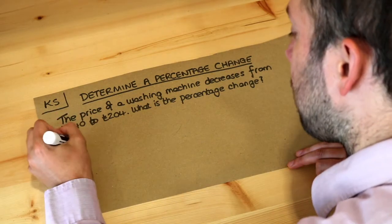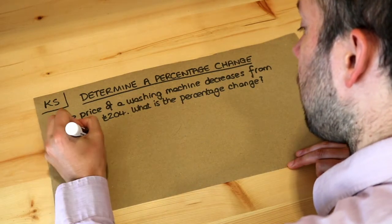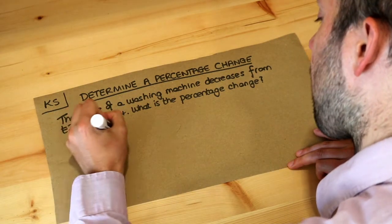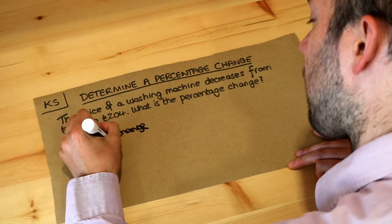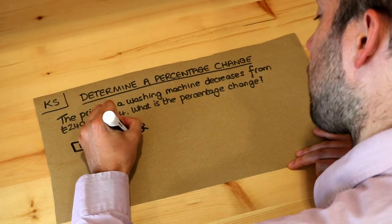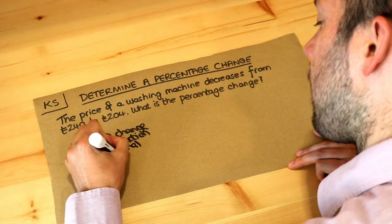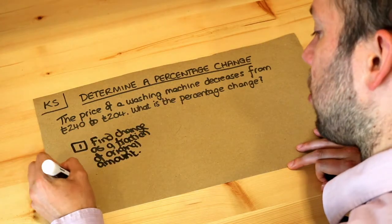Now the steps to answer this question are this. You find the change as a fraction of the original amount and then we convert that fraction to a percentage.